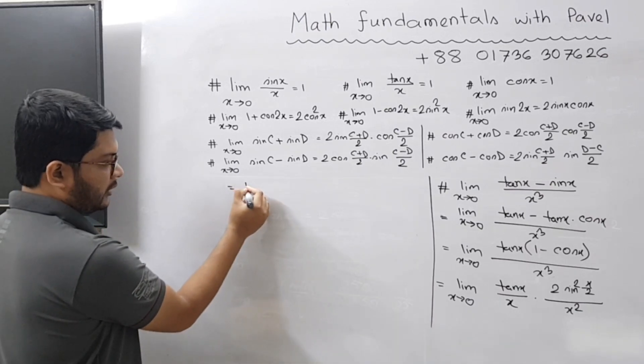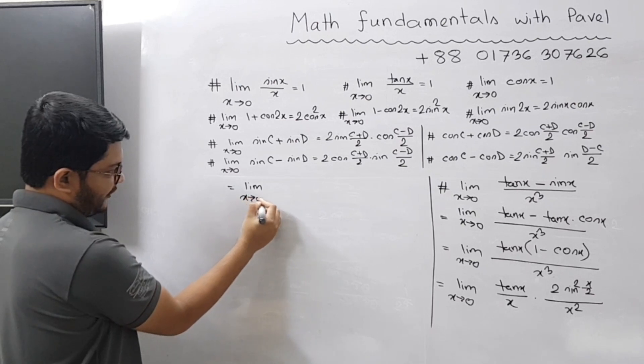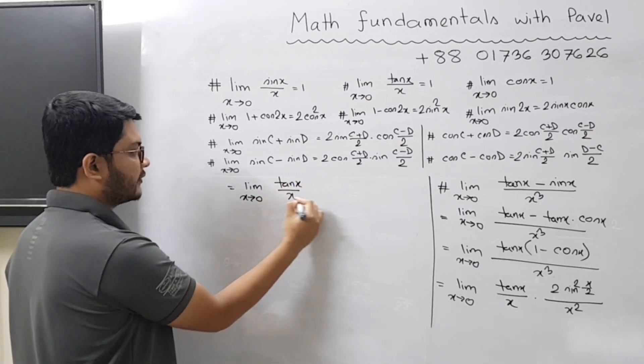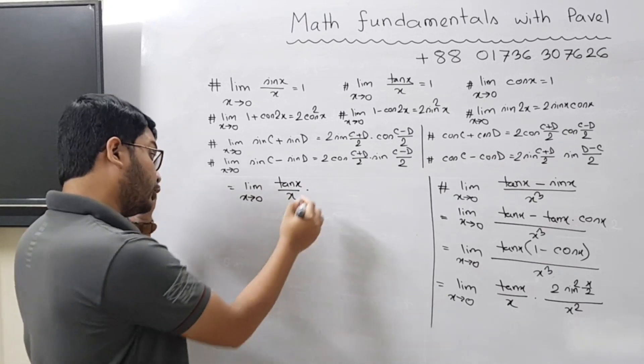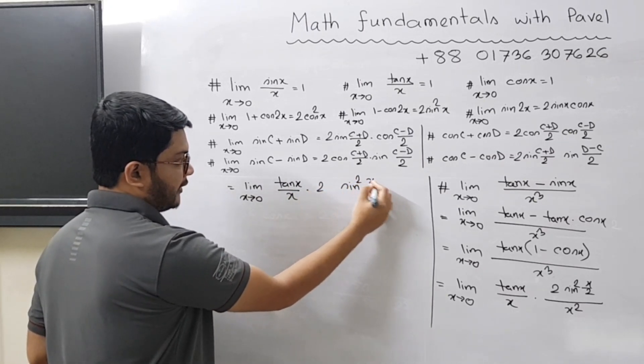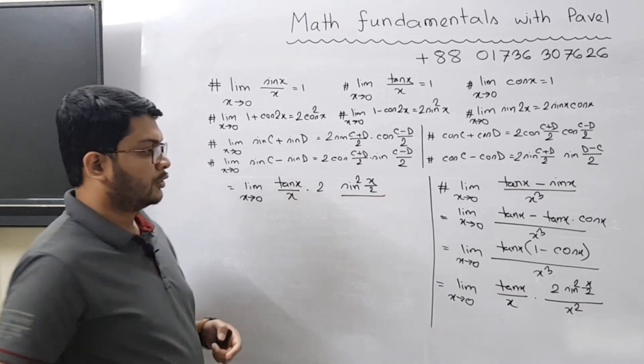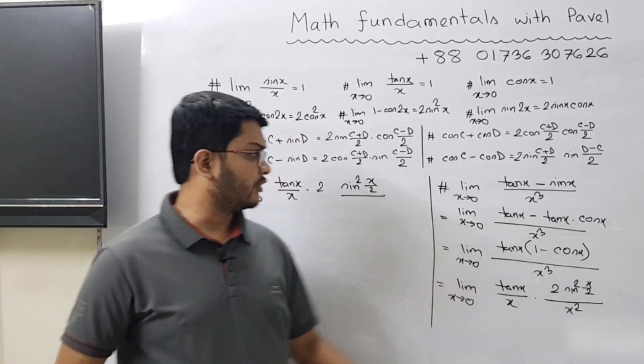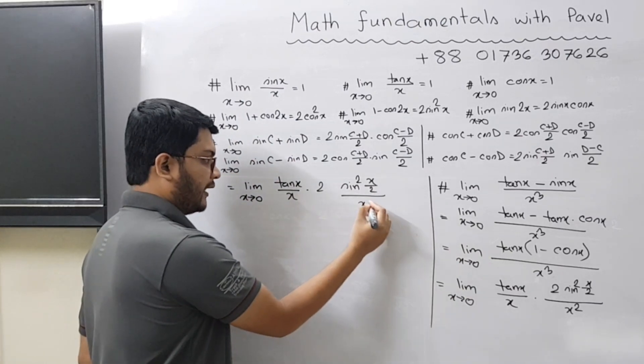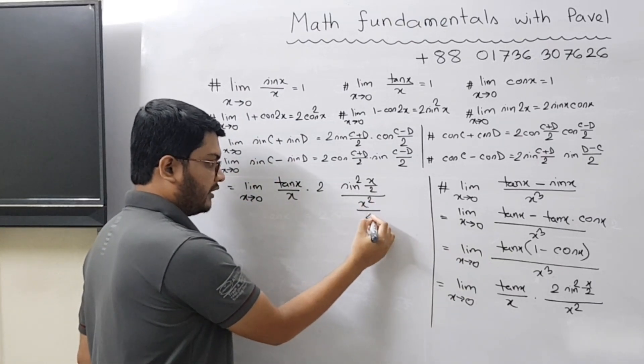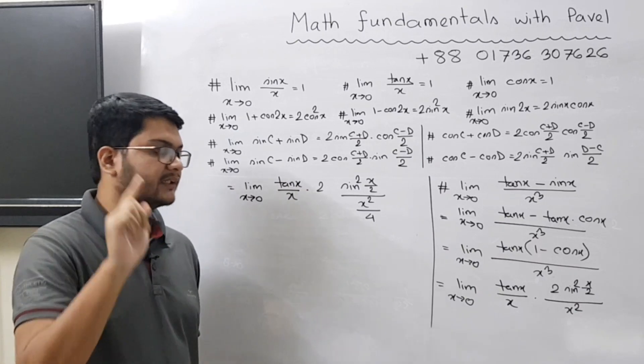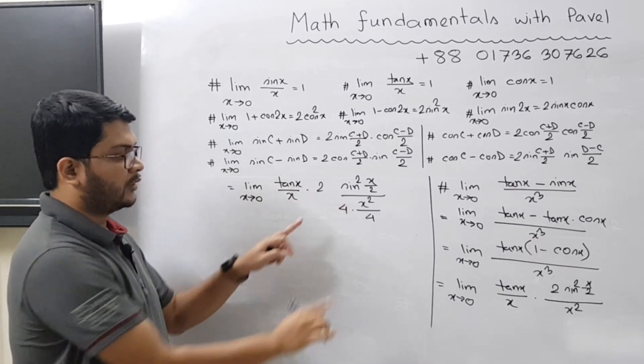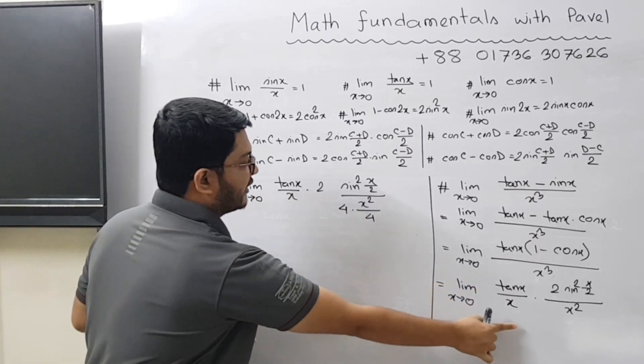So that would be equal to limit x tends to 0, you have tan x divided by x, multiplied by 2 times sin² (x/2). What we need to do here is: you have x², but you have to divide it with 4, so it would be x² divided by 4. Why? You will understand in the next line. And you multiply here with another 4, so that these two cancel out and you get the previous line.